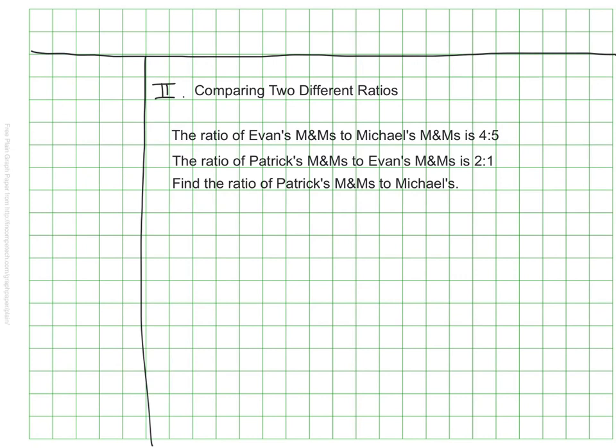But we have to be really careful, particularly this time, that the length of the rectangles are exactly as they need to be. I'm going to start by doing a tape diagram just for Evan to Michael's M&Ms of 4 to 5. Now that I have Evan and Michael recorded as 4 to 5, I then also have to compare Patrick and Evan.